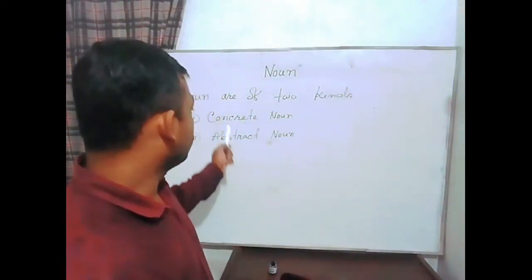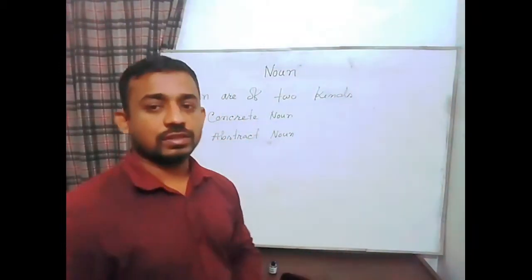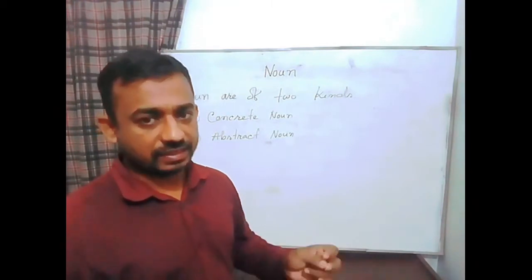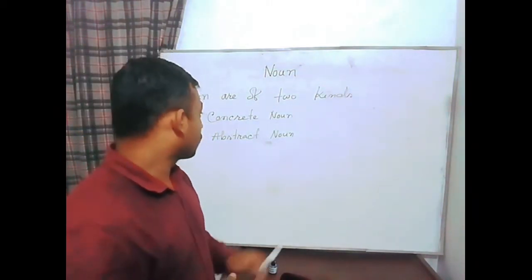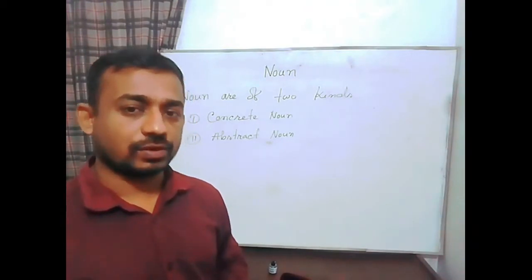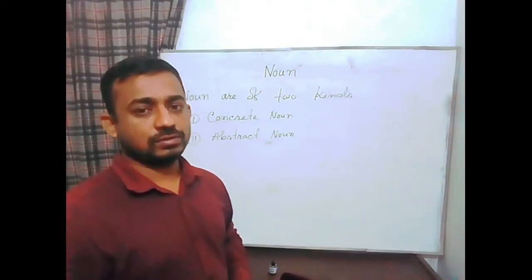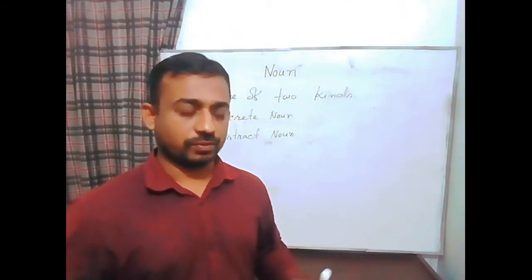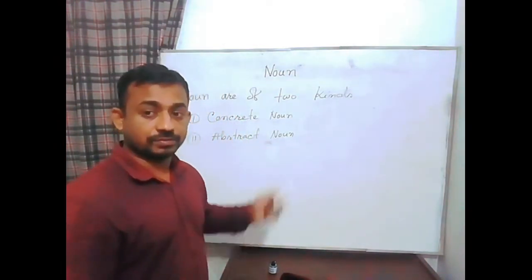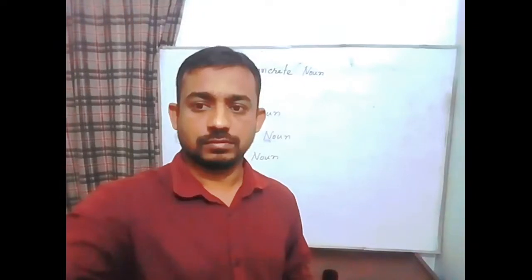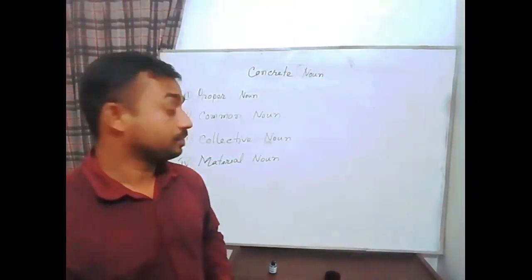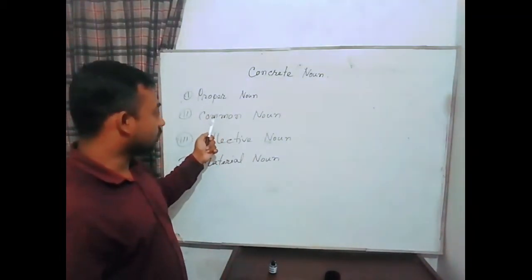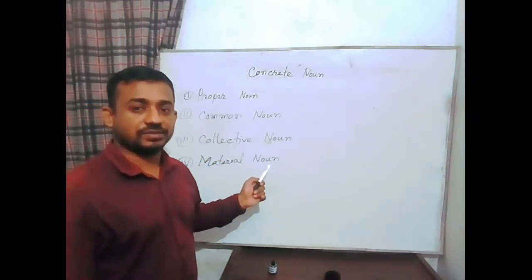First, we will discuss about concrete noun. Concrete noun has physical existence and we feel it by our senses. Concrete nouns are of four kinds: proper noun, common noun, collective noun, and material noun. We are going to discuss each one based on concrete noun. Concrete nouns are of four kinds — first, proper noun; second, common noun; third, collective noun; and fourth, material noun.